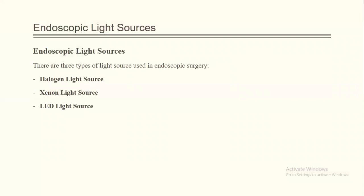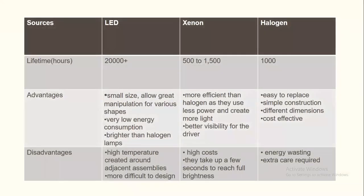As a general background, we have several types of light sources for endoscopy: halogen, xenon, and LED. The best choice for us is the LED, of course, since it has many advantages over the others.